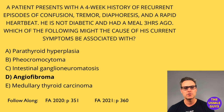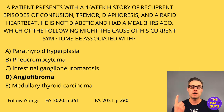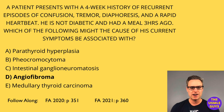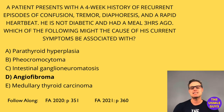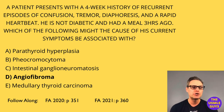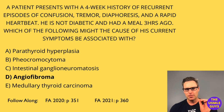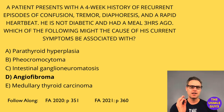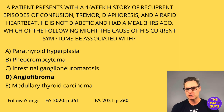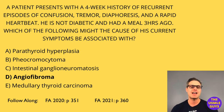MEN2A is associated with parathyroid gland hyperplasia, pheochromocytoma, and medullary thyroid carcinoma, which affects the parafollicular C cells. This is associated with mutations of the RET oncogene, which codes for the receptor tyrosine kinase.